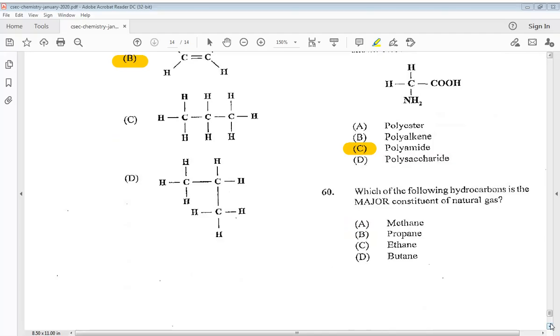Our final question says which of the following hydrocarbons is a major constituent of natural gas? A methane, B propane, C ethane, or D butane. So we know it is A methane.